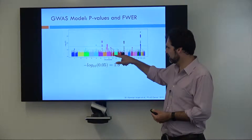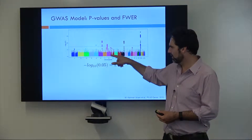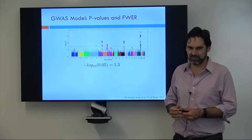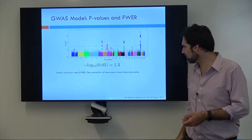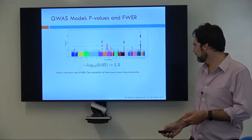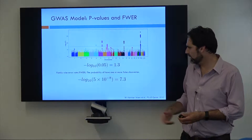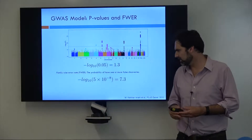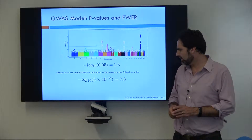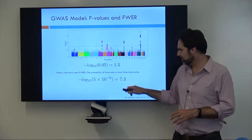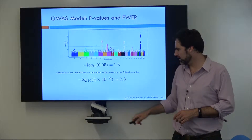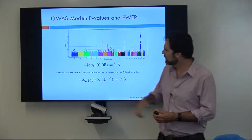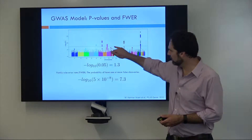So basically, if we control at this threshold, all of these variants up here are false discoveries. Instead, we're going to use a threshold of 5 times 10 to the negative 8. And that controls — when you take the negative log10, that's at 7.3,